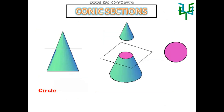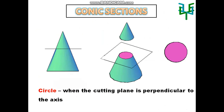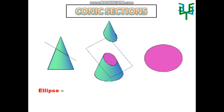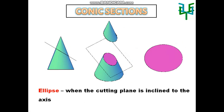A circular shape will be obtained when the cutting plane is perpendicular to the axis of the cone, or parallel to the base of the cone. An elliptical shape will be obtained when the cutting plane is inclined to the axis of the cone and passes through the generators.